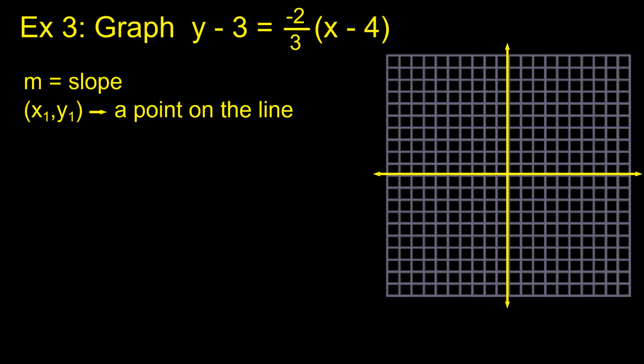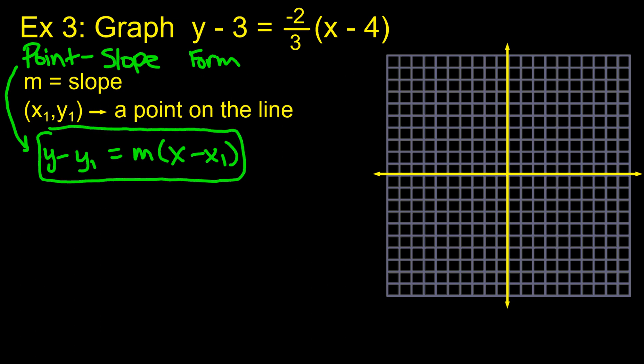Okay, the next form is called, and I forgot to type this in, but I'll write it in. This is called point-slope form. Point-slope form. And so point-slope form of a line is y minus y1 equals the slope times x minus x1. This one, I think, is the easiest to work with. I think it's the most valuable. It's crucial that you know this one because it's super easy. If you know the point and you know a slope, you know the slope and you know a point, you're good to go. So in this equation, m is the slope. So that means my slope is going to be negative two-thirds.